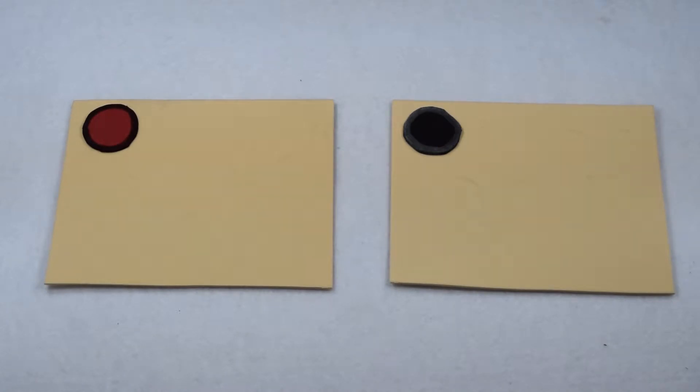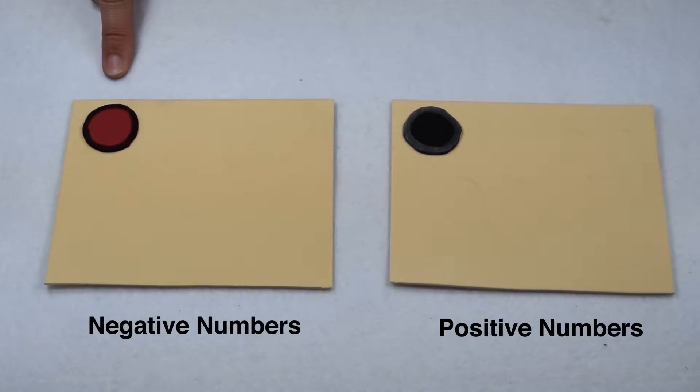When we're working with negatives and we want to physically represent the value of our numbers, we can use chipboards instead of number lines. On our chipboards, our black chips are going to represent positive values and our red chips are going to represent negative numbers.